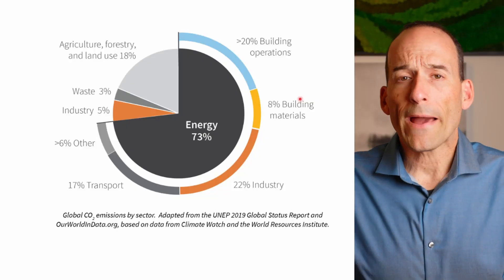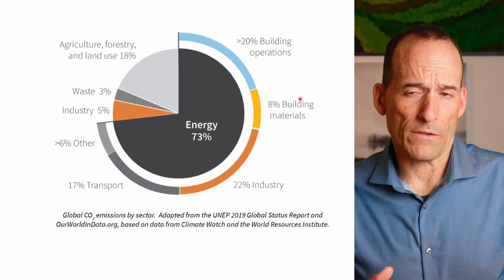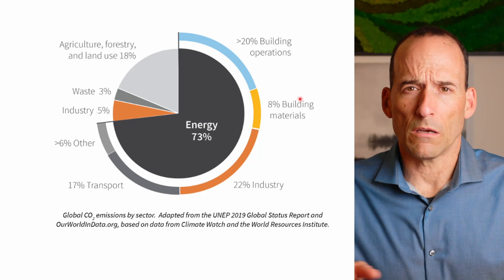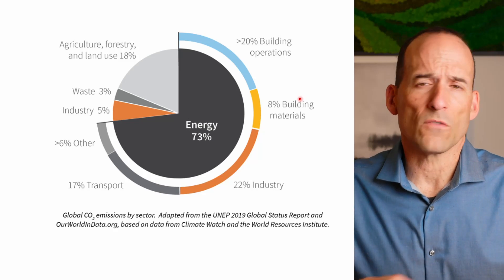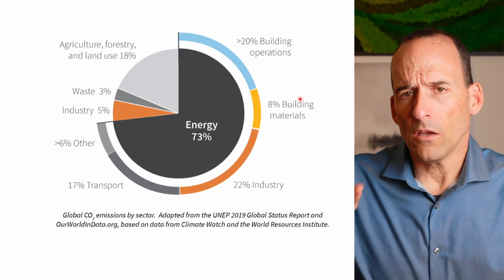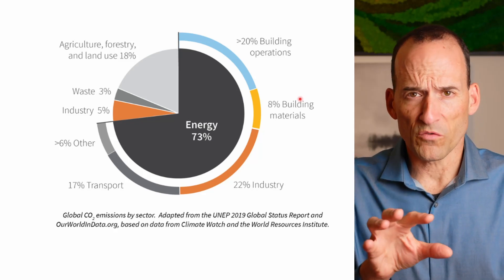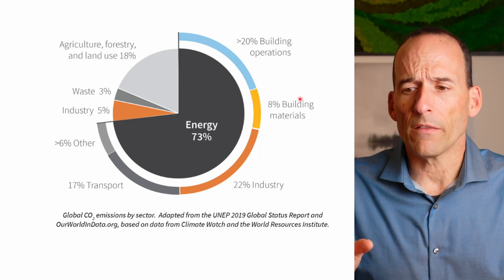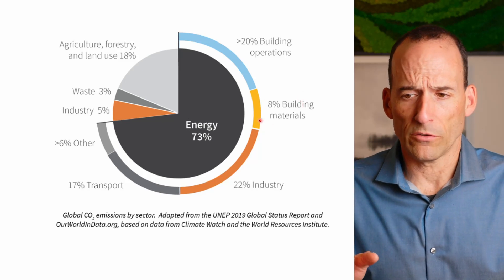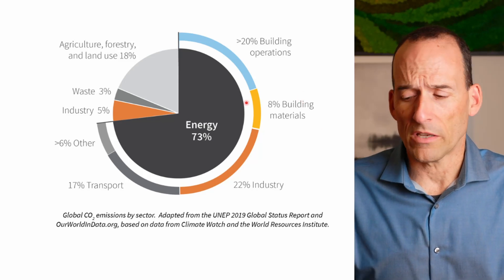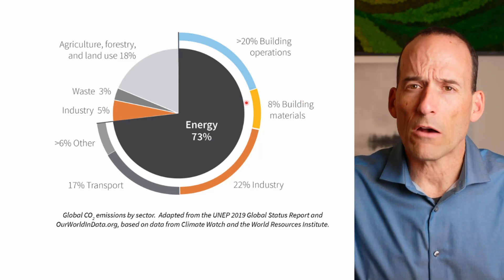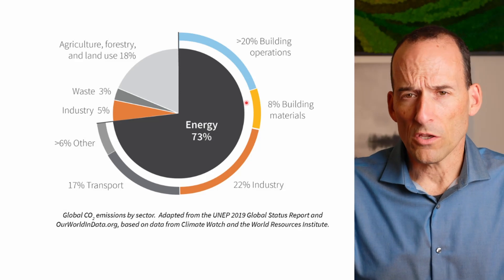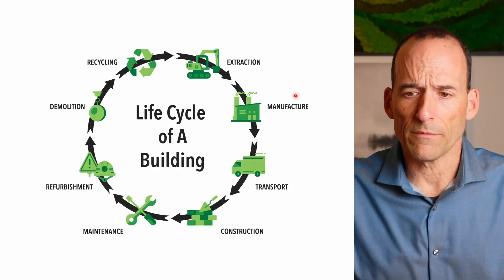If we go back and look at that graph again, we see that 20% of the operations of all the buildings on the planet goes to those functions. Then how do we look at building materials — this 8% — which has this outsized impact on the carbon usage on the planet?